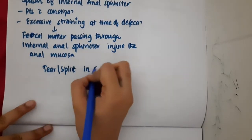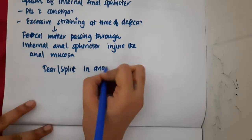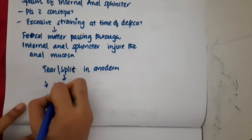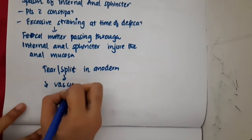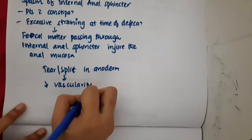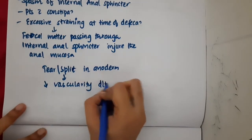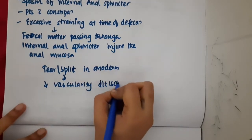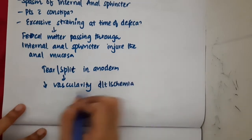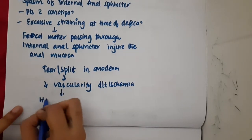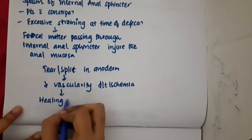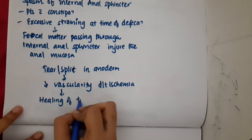Whenever there is a tear or split in the anoderm — that is, the anal mucosa — this will decrease the vascularity of that area due to ischemia. Because of this decreased vascularity, healing of the tear decreases or becomes slow.